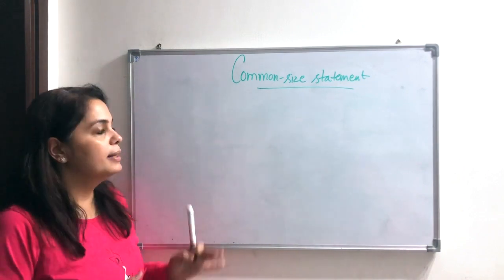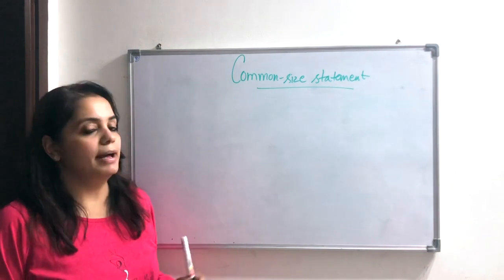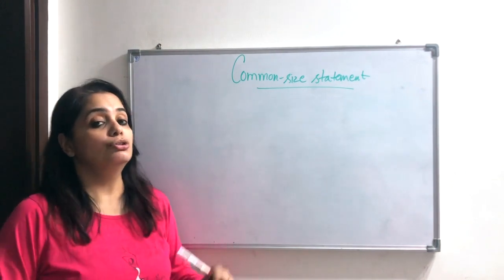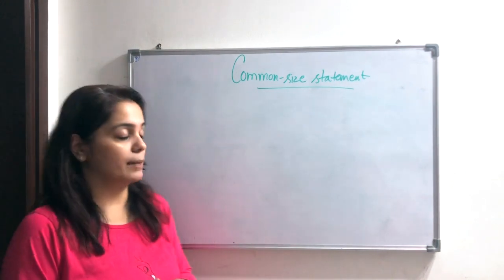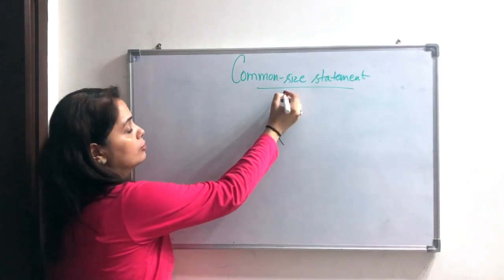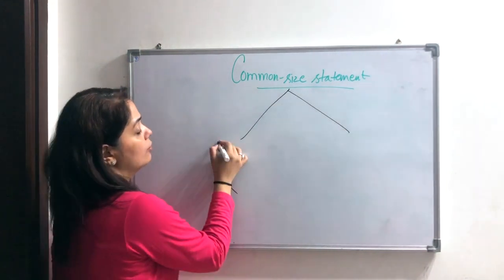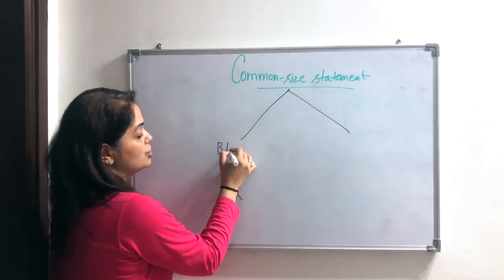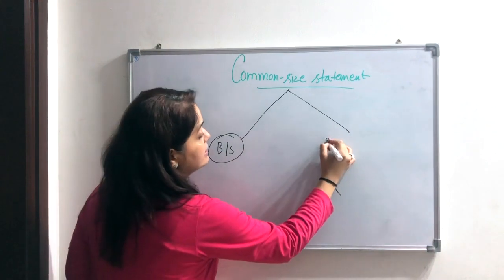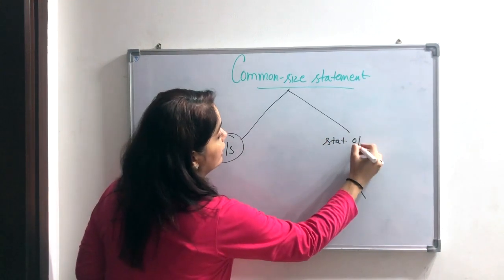It is very simple, even more simple than the comparative statement. So listen carefully. First, the common size statement — we can see it in the balance sheet and in the statement of profit and loss.